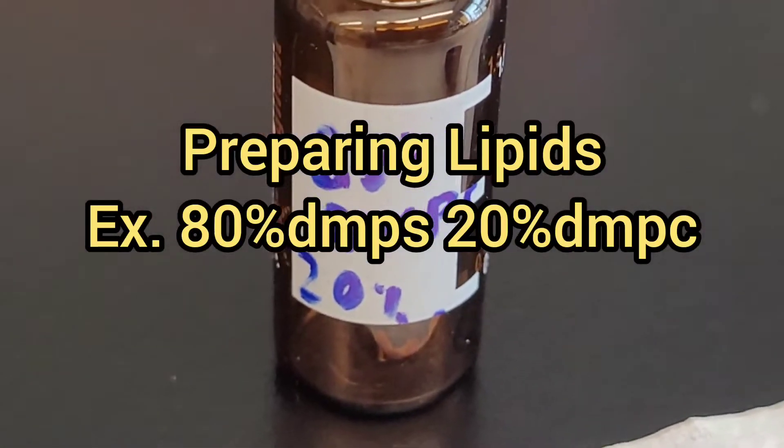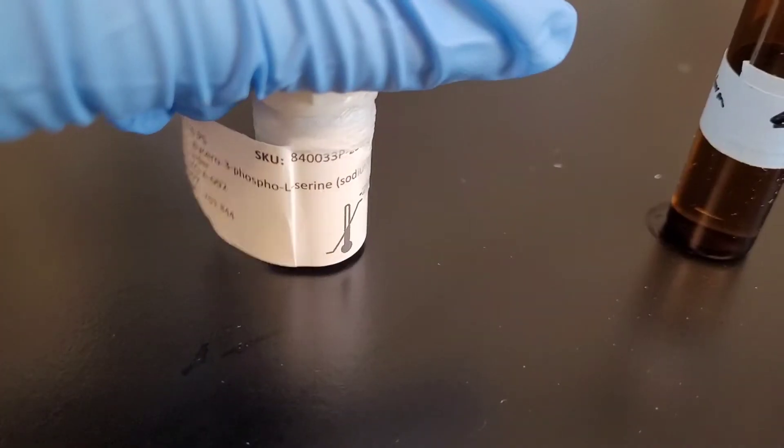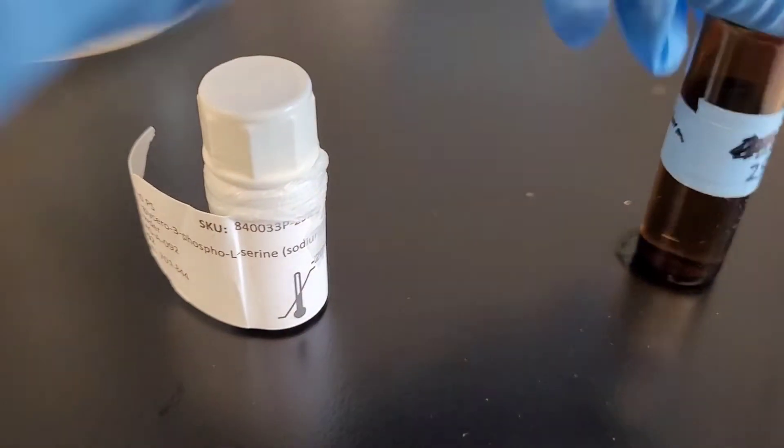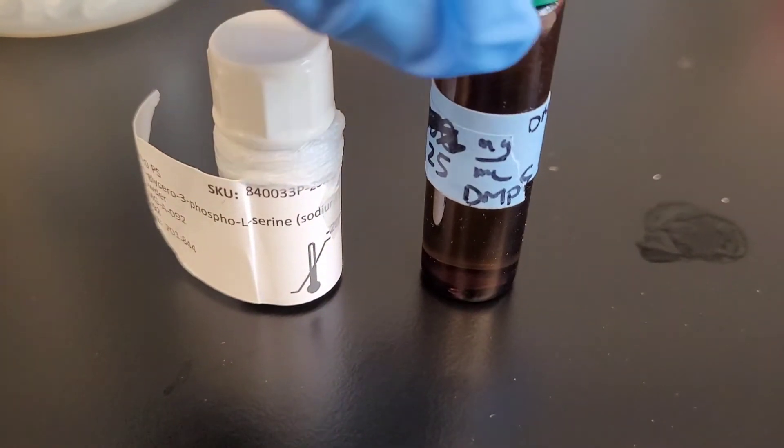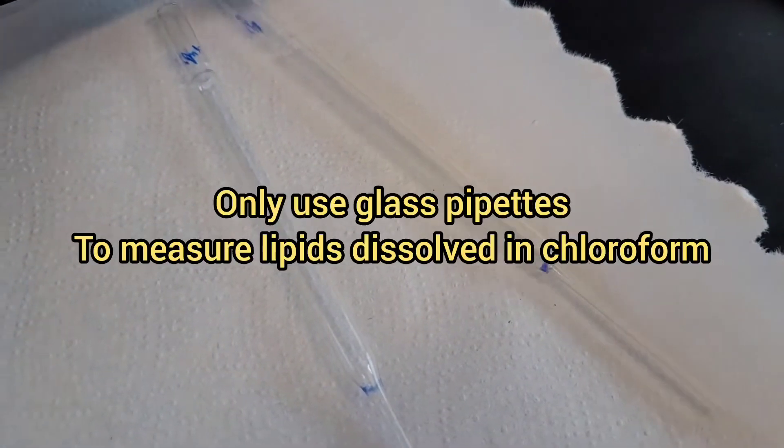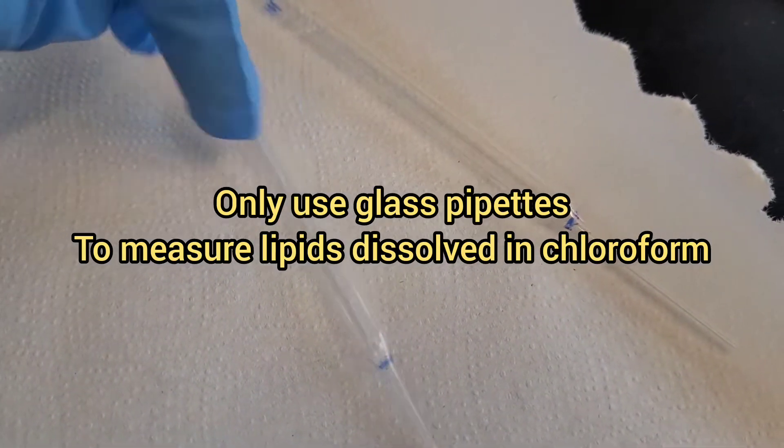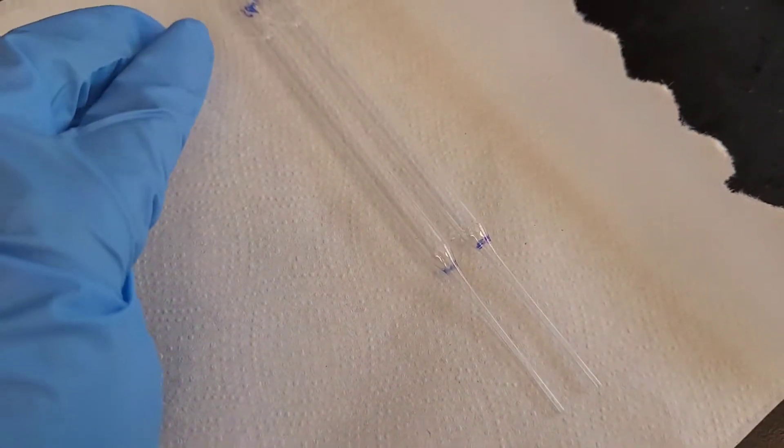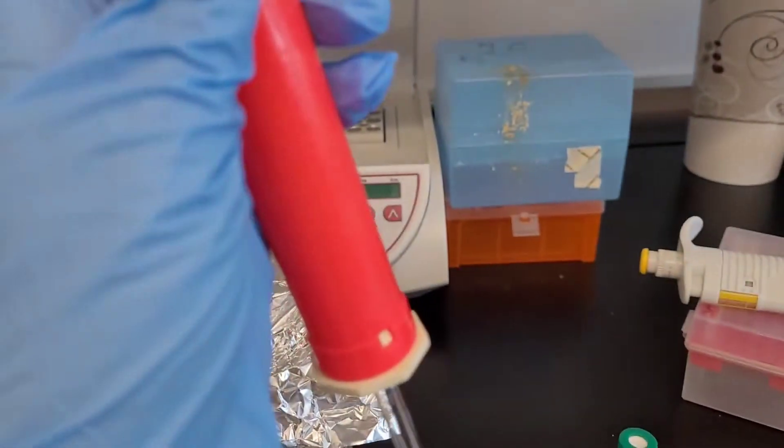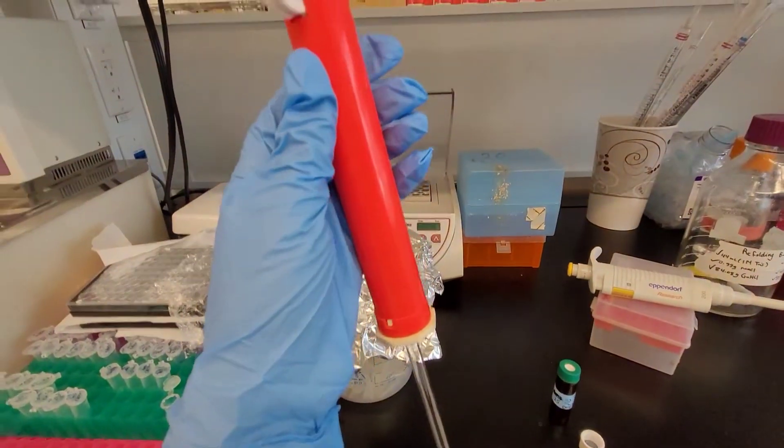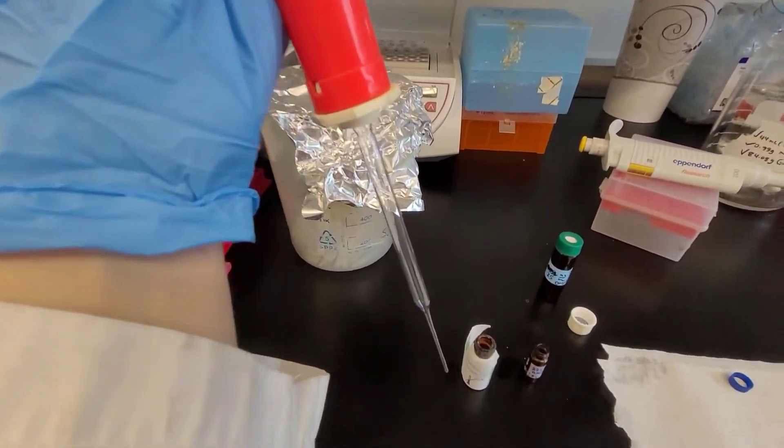This tutorial is meant to show you how to prepare phospholipids before the extrusion step. For example, today I'm making 80% DMPS, 20% DMPC phospholipids and I'm measuring it with glass pipettes because they're dissolved in chloroform, so never use plastic pipettes for this.